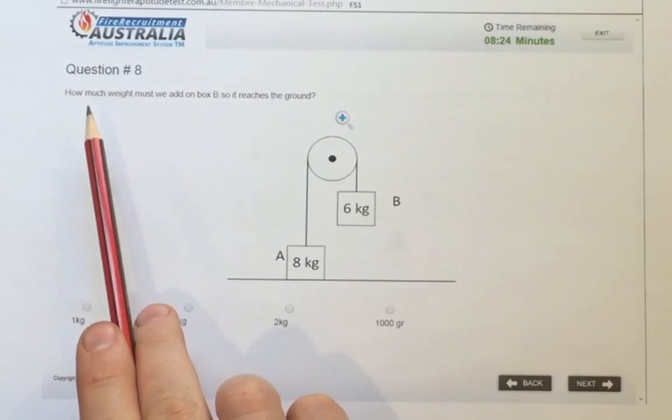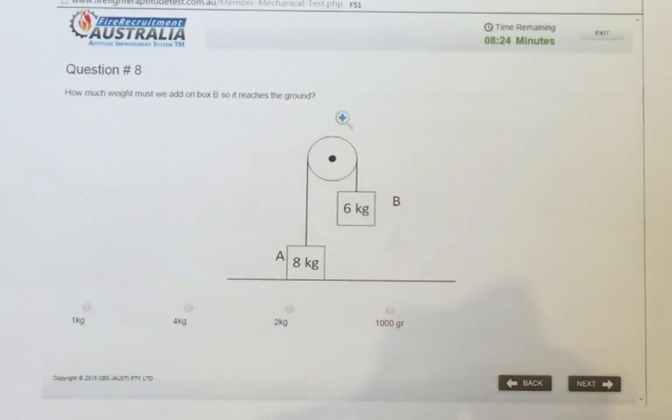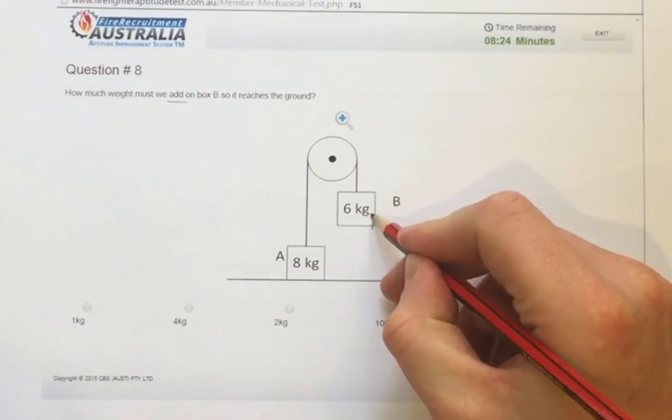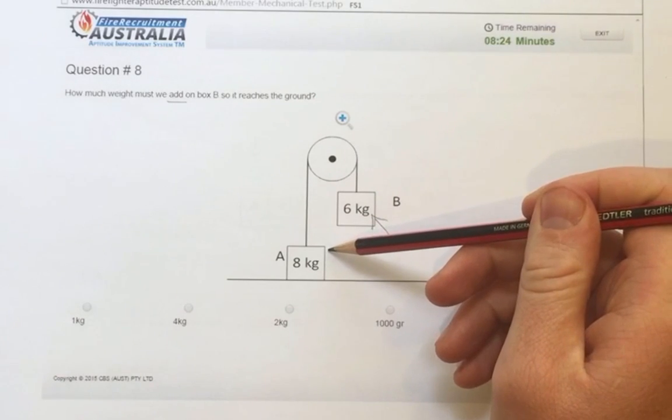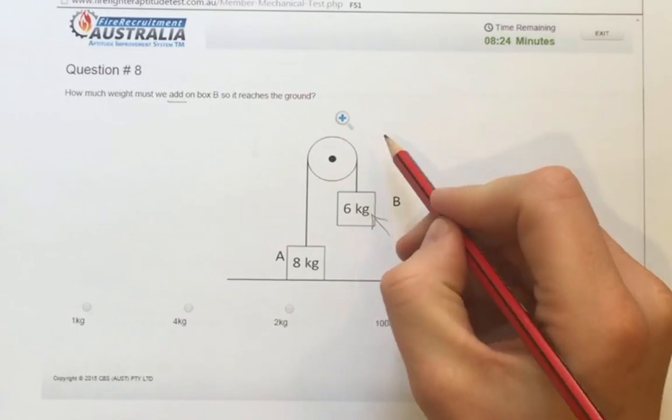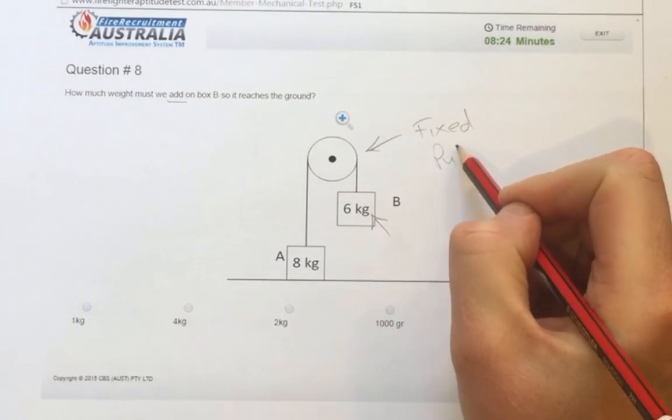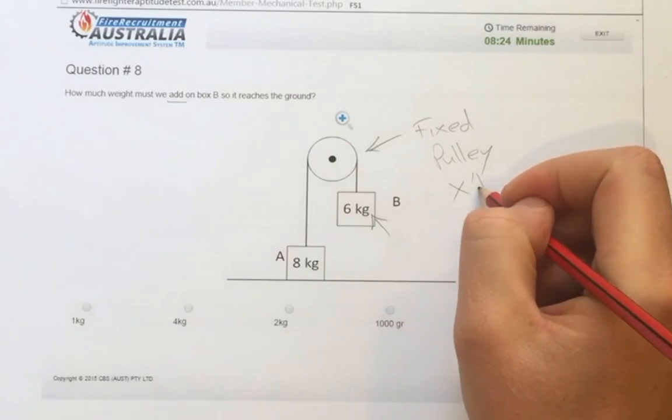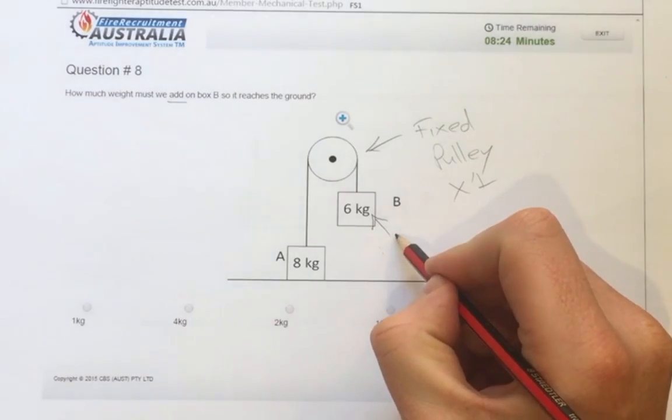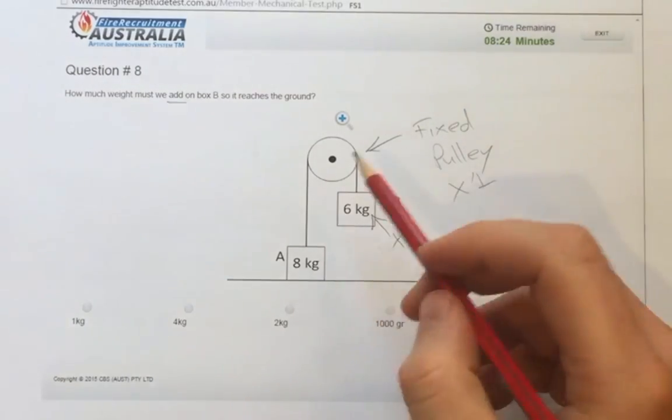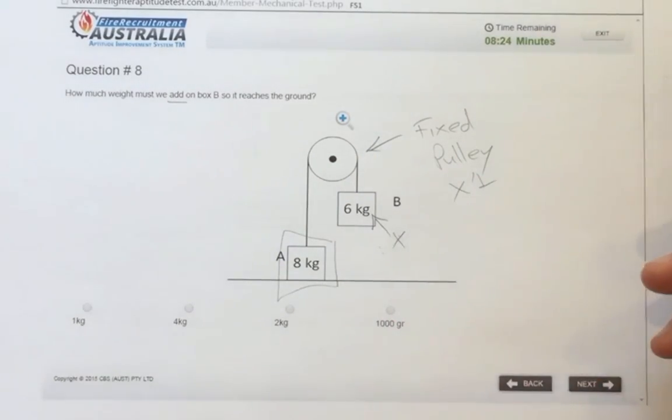We need to be careful with this sort of question as far as reading it. How much weight must we add? So it's already six kilograms. So how much weight do we need to add to overcome the eight kilograms? So as this is a fixed pulley and there's only one of them, it requires more effort on this side to lift that weight than if it was more than one pulley.